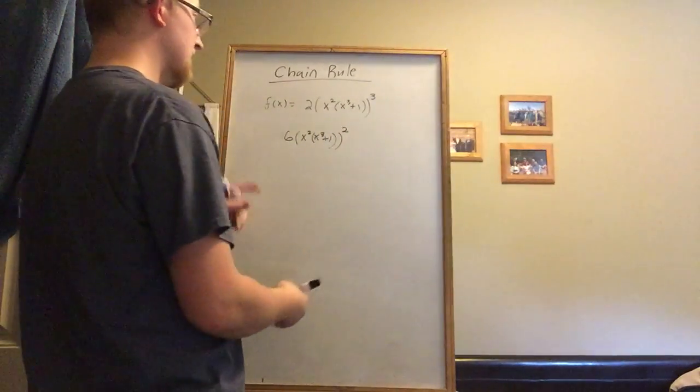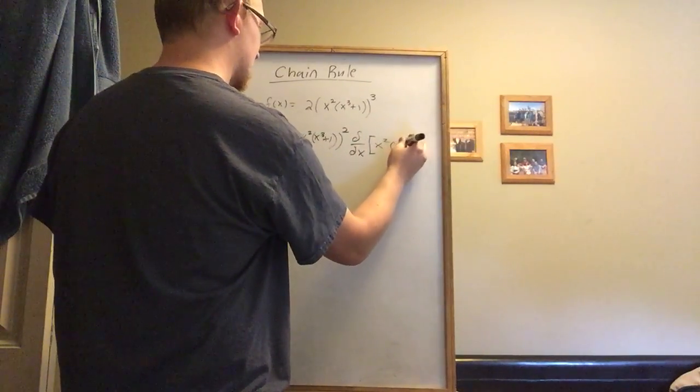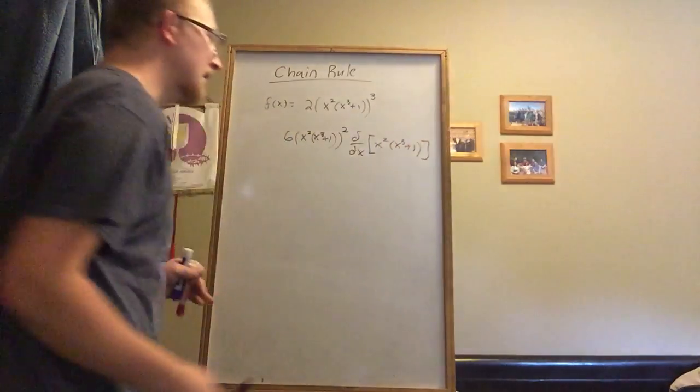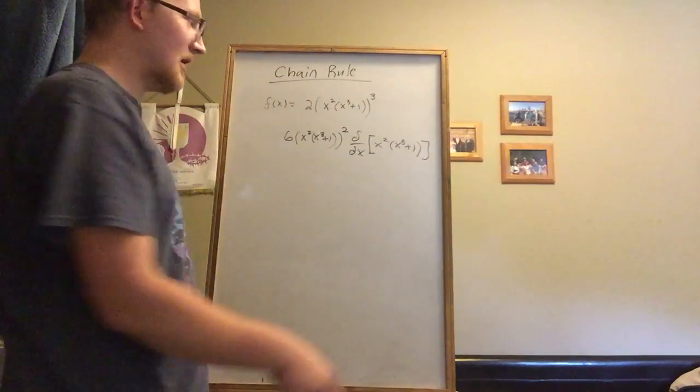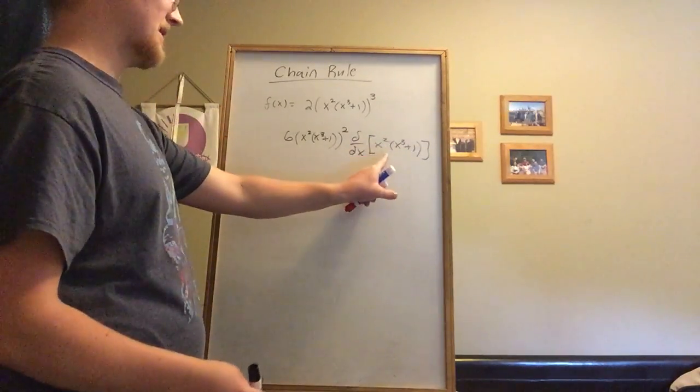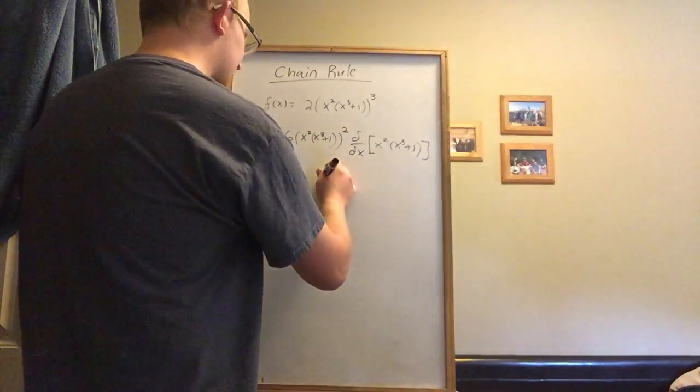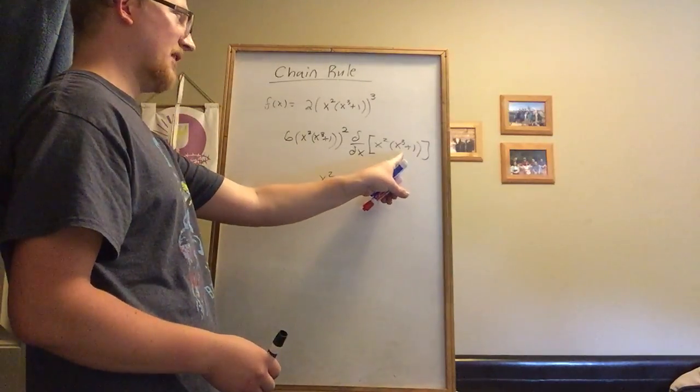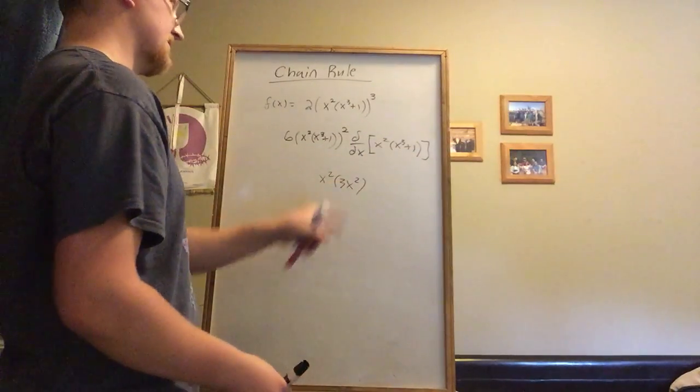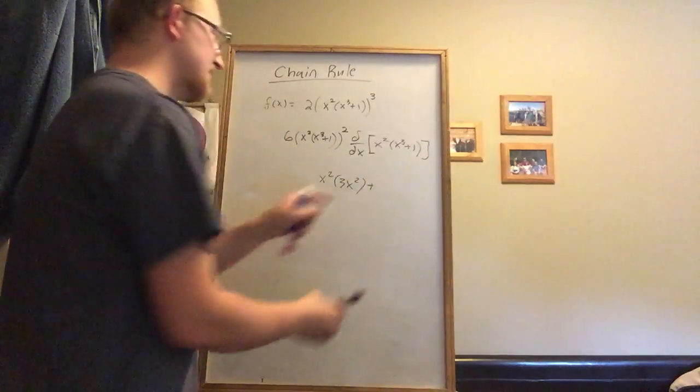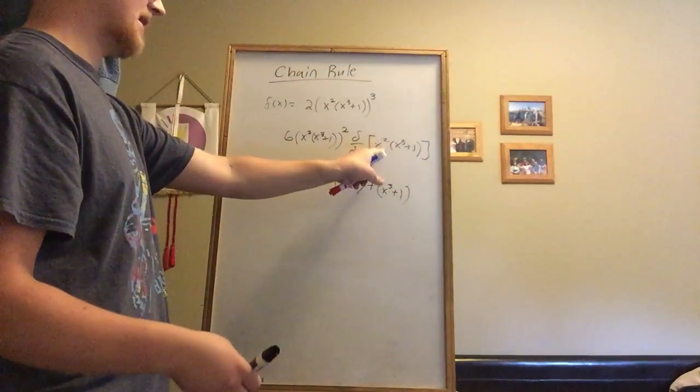Now we multiply this by the derivative with respect to x of the inner function: x² · (x³ + 1). How do we take the derivative of this? We have two things multiplying together in a product, so we apply the product rule: first d second plus second d first. First times the derivative of the second - the derivative of x³ + 1 using the power rule is 3x², because the 1 goes away as it's constant. Plus second times d first: (x³ + 1) times the derivative of x², which is 2x.